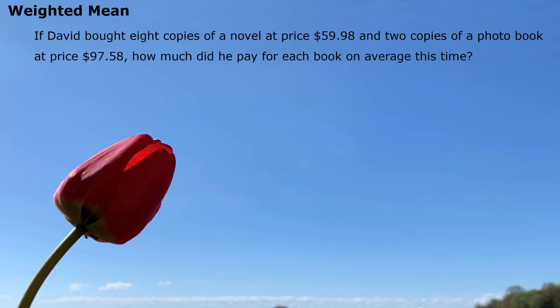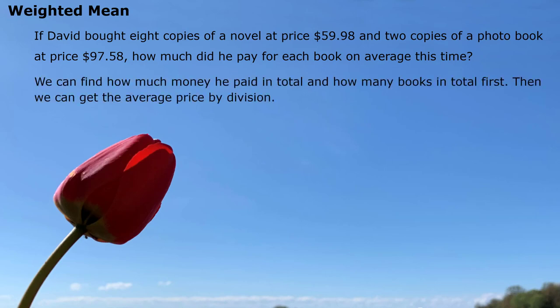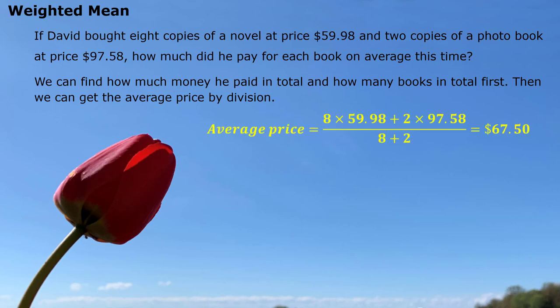If the situation changed — David bought eight copies of a novel at a price $59.98 and two copies of a photo book at a price $97.58 — how much did he pay for each book on average this time? We can find how much money he paid in total and how many books in total, and then get the average price by division. The average price is $67.50 for each book.